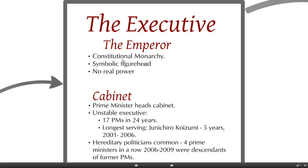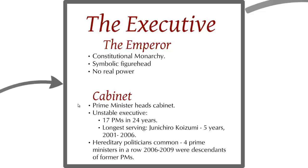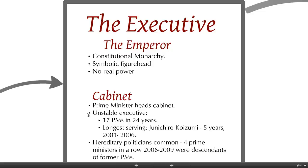The emperor is the head of state. This is a constitutional monarchy, so the emperor is a symbolic figurehead with no real political power — again like the United Kingdom. The real action happens in cabinet. The prime minister is the head of cabinet. However, this executive has proven historically extremely unstable, having seen 17 prime ministers in 24 years.